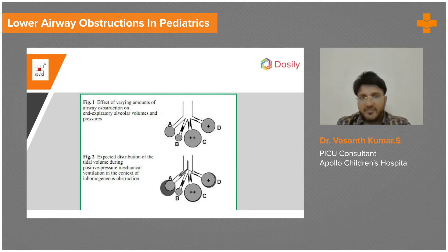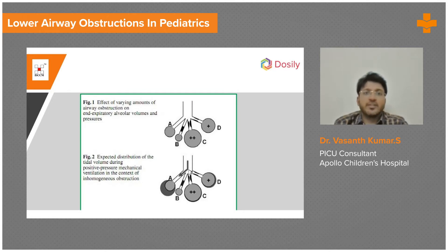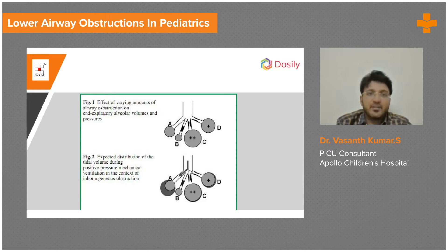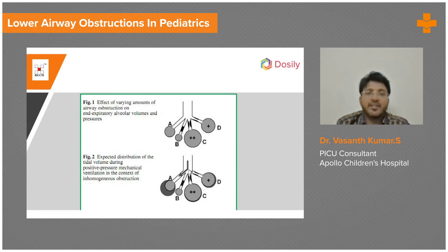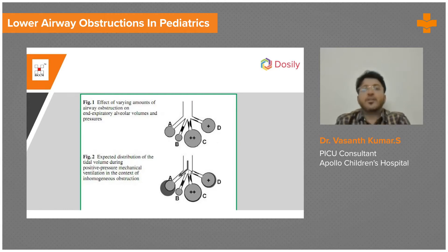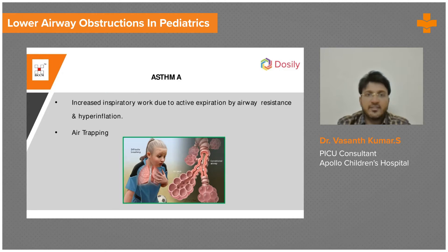In the lower figure, when positive pressure is given on the ventilator, all the air goes to point A, which becomes overinflated. No air goes into point B. Some air goes into points C and D. This is the same as in ARDS. Whatever your normal lung is gets more and more inflated, and already hyperinflated points like C and D get even more hyperinflated. This is the problem in asthma.